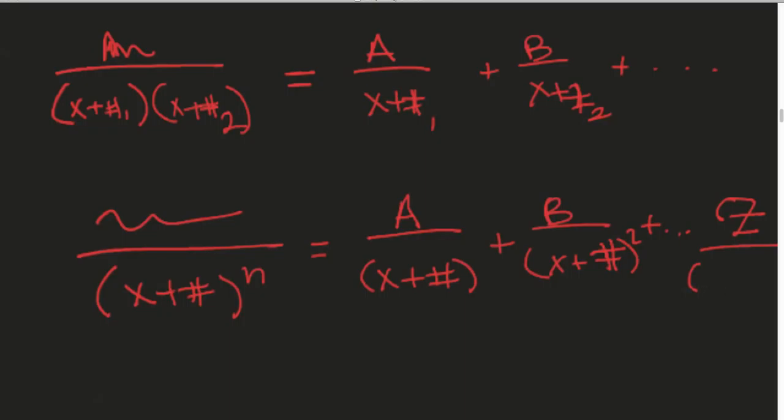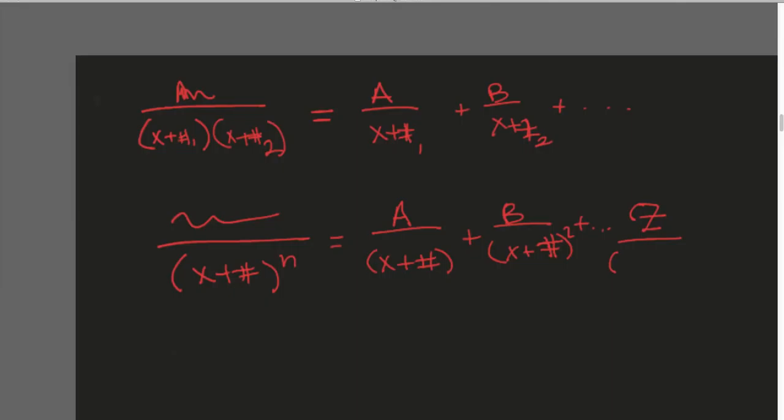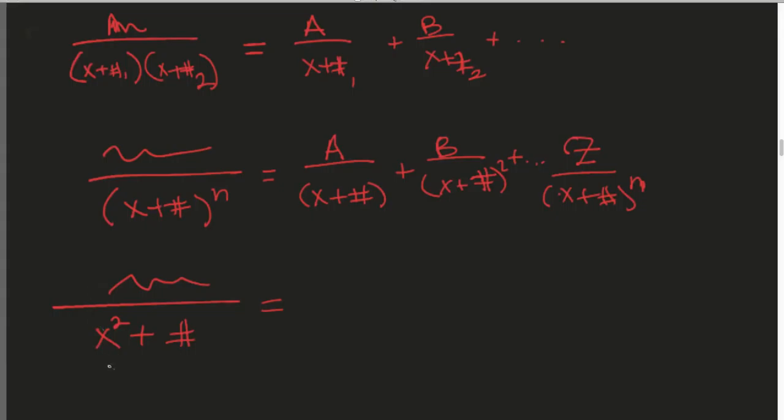Now we look at what if we have a power of two on this one. We have to have a difference of numerator-denominator power of only one. This is X to the first, no X. This is X squared, so on top we have to have an X.